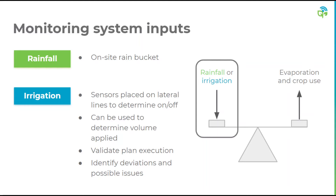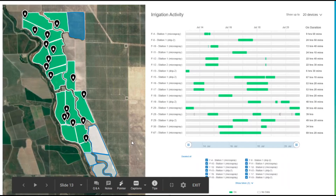So far I've only discussed how we measure and model outputs of water on the farm, and that's only one side of the water balance. Our weather stations are equipped with rain buckets that record precipitation data and provide it to the grower in real time. Irrigation is measured by placing sensors on lateral lines to determine on-off times, which can then be used to determine volume applied. These inline sensors provide an increased amount of traceability on the farm — growers are able to validate if their plans were executed and identify deviations and possible issues in the field without actually having to be there during an irrigation event.